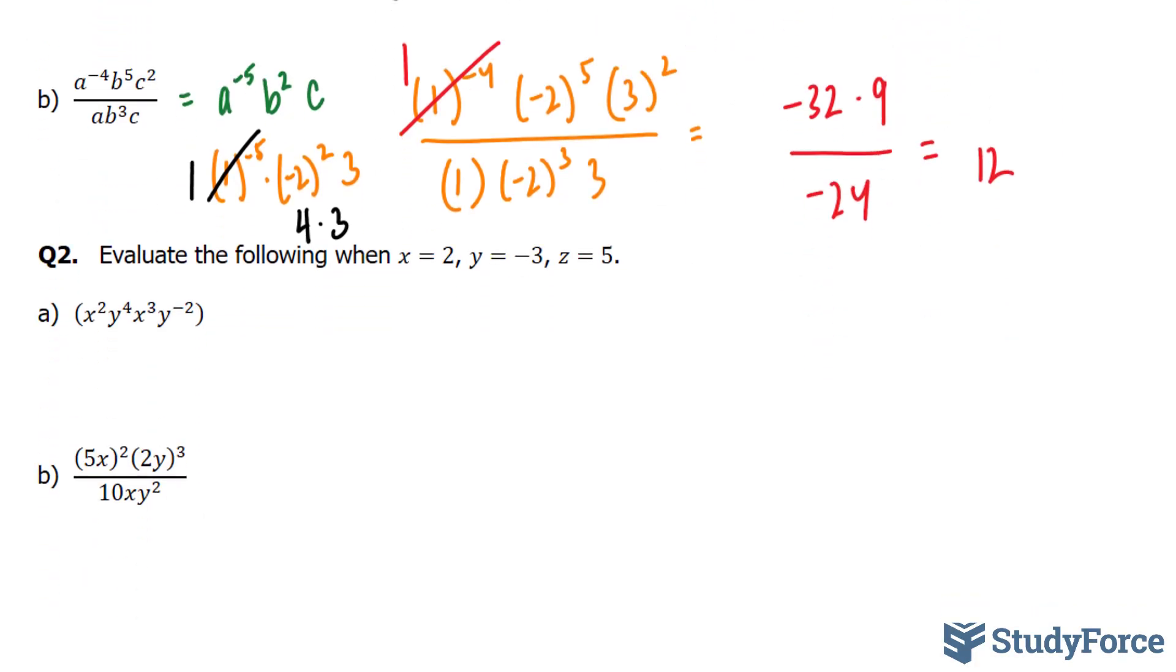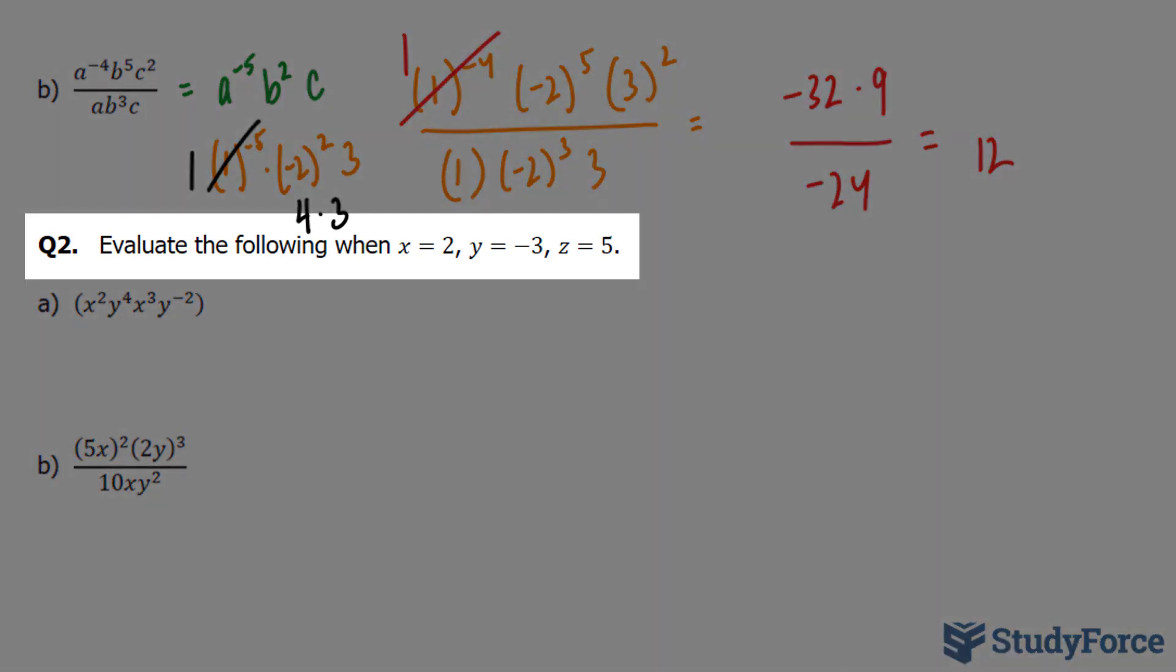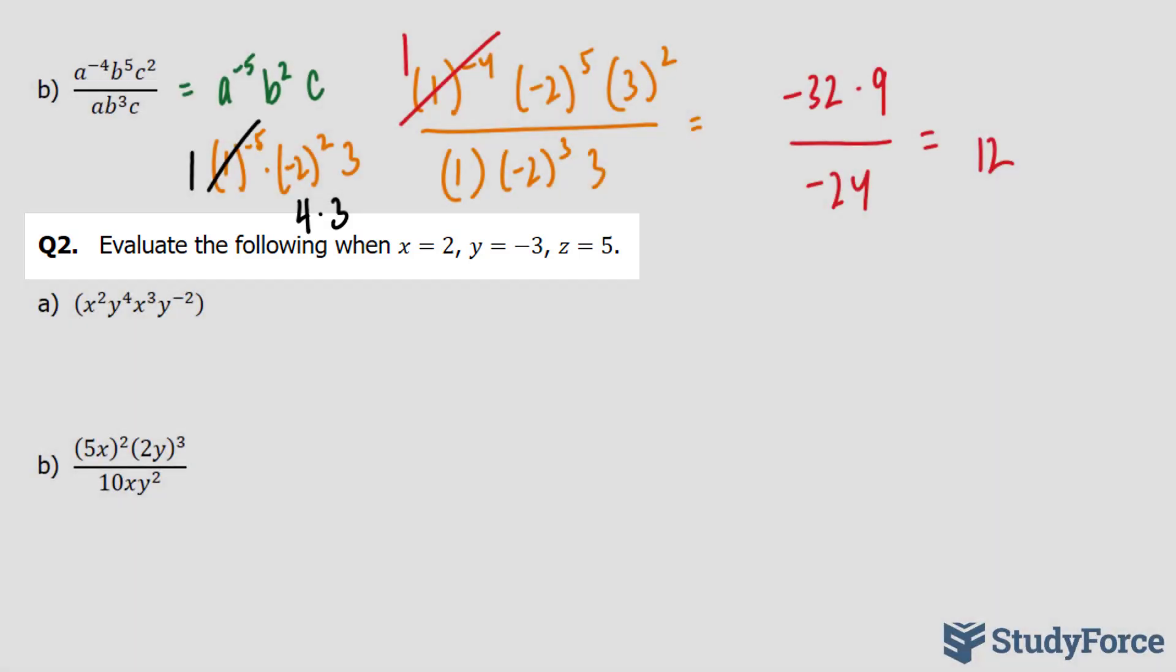Let's move on to question number 2. In question number 2, they are asking us to evaluate the following when x is equal to 2, y is equal to negative 3, and z is equal to 5.